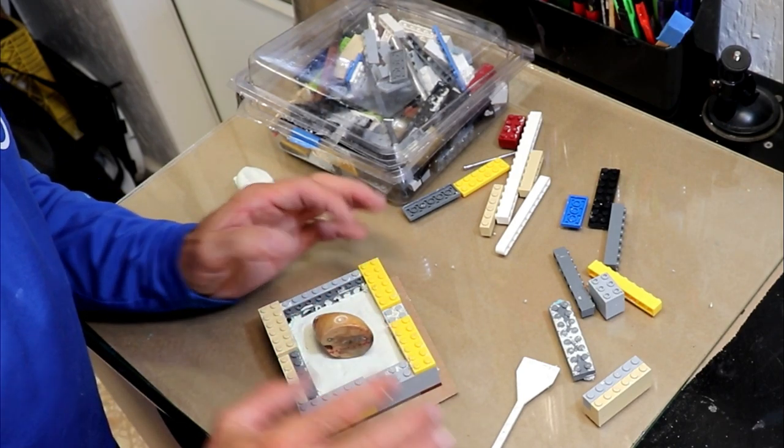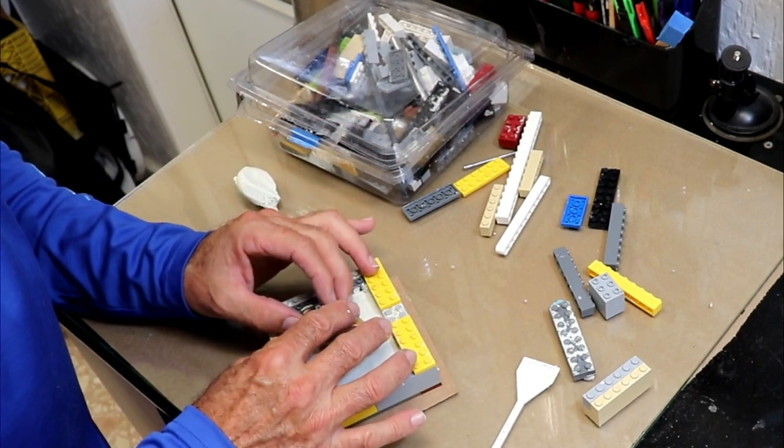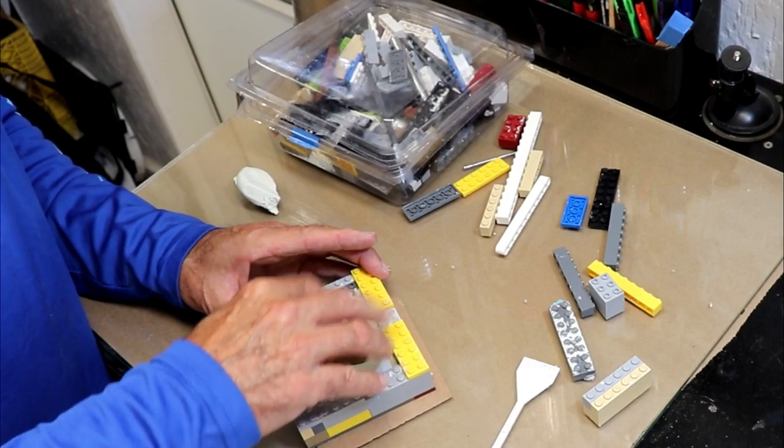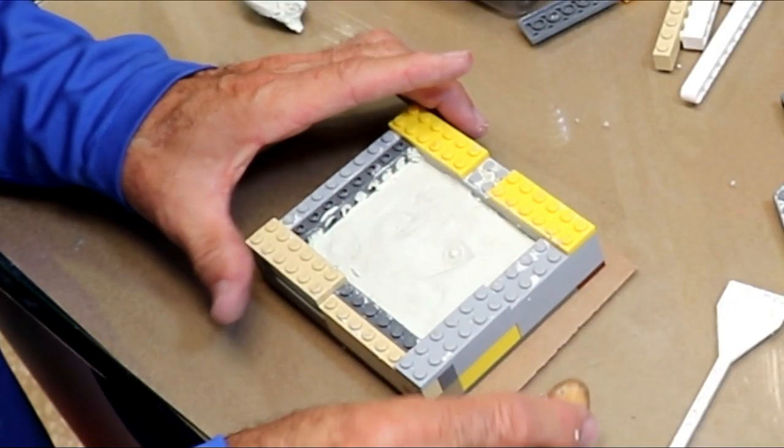I want about equal space front and back. That's about right. Now I'm going to embed it in this and that'll give me the general space and location.